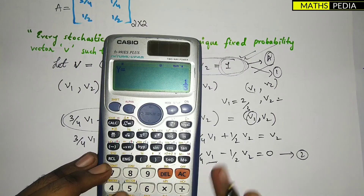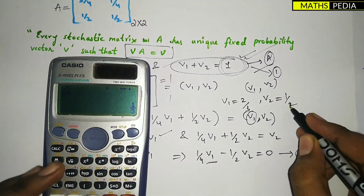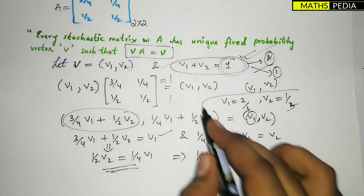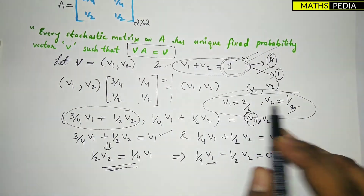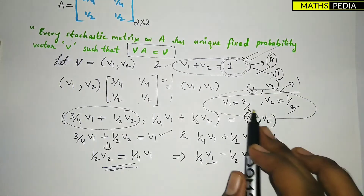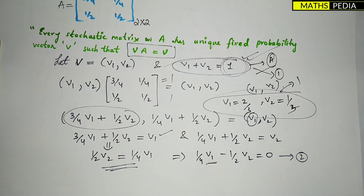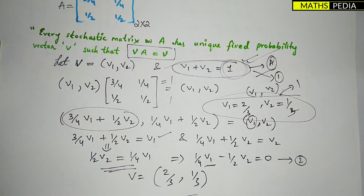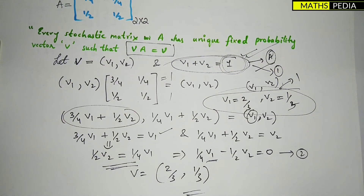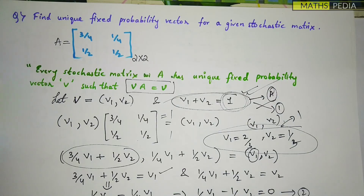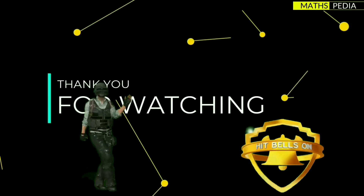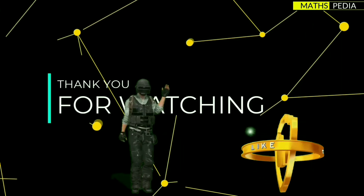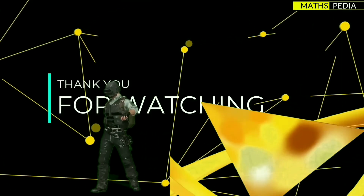After solving, we get V1 = 2/3 and V2 = 1/3. Verify: 2/3 + 1/3 = 1 — correct! So the unique fixed probability vector V is (2/3, 1/3). This completes the solution for this 2×2 stochastic matrix.